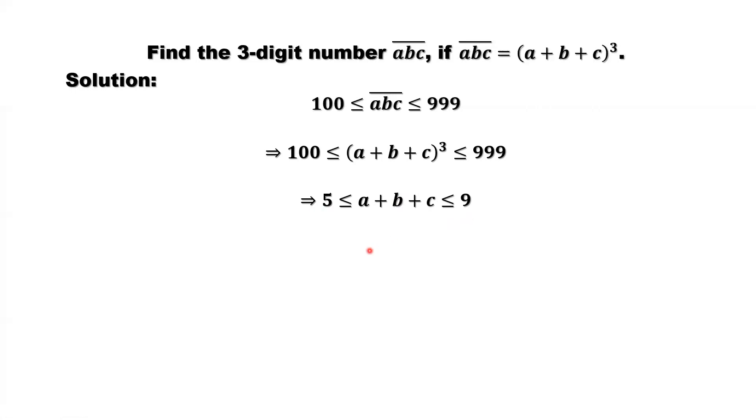Now we can consider different situations for A plus B plus C. The sum can be 5, 6, 7, 8, 9, totally 5 different situations. We discuss one by one to check if there's an answer.